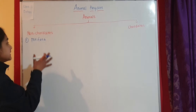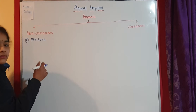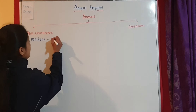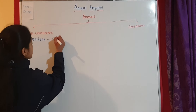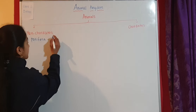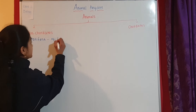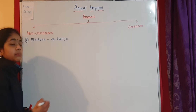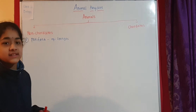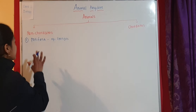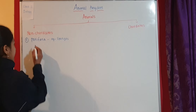Non-chordates include the first phylum, which is Porifera. Porifera includes sponges — you can write example as sponges. If you want to be more specific, examples include Sycon and other sponges. So this is the first phylum, Porifera.